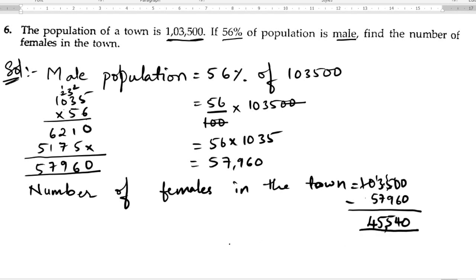Therefore, the female population in the town is forty-five thousand five hundred and forty.